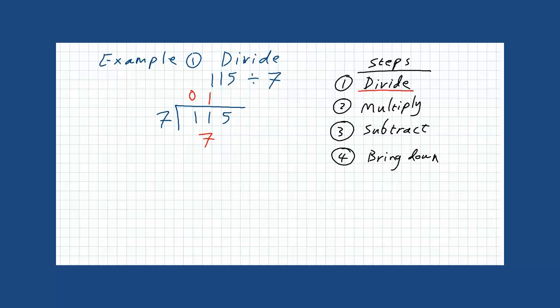Now, we have done multiplication. Third step, subtract 11 minus 7. This will give you 4. Now, we have done the third step. Last step, get down 5 beside 4. It will be 45.